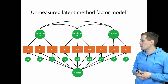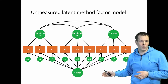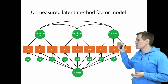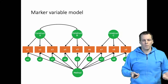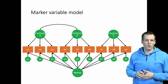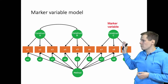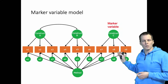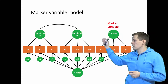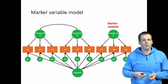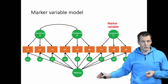This is the unmeasured latent method factor model. In our example we have three constructs that influence the indicators, plus a source of method variance represented by a single factor. There's also the marker variable model, where we have a theoretically unrelated construct — construct C here would be the marker variable or marker construct, and these would be the marker variables. The idea is that if construct C is assumed to be uncorrelated with the key constructs A and B, then the only reason for correlations between the interesting items and the marker construct is shared method variance.